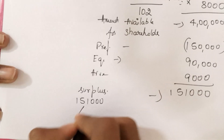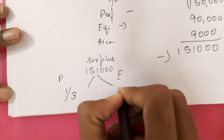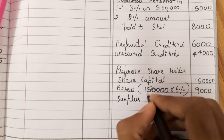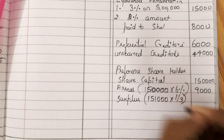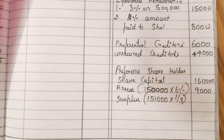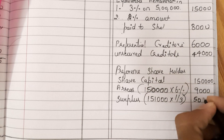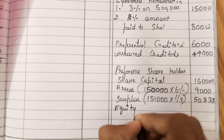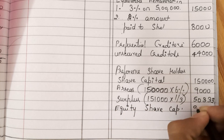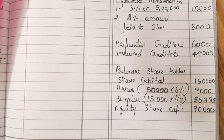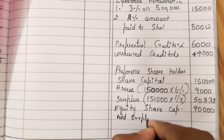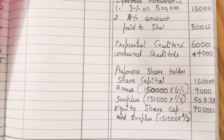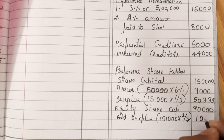In the surplus of 1,51,000, we have to distribute between preference and equity shareholders. Preference shareholders will get 1/3rd of the surplus: 1,51,000 × 1/3 = 50,333. Equity shareholders will get 2/3rd of the surplus: 1,51,000 × 2/3 = 1,00,667. So we have now distributed all amounts.